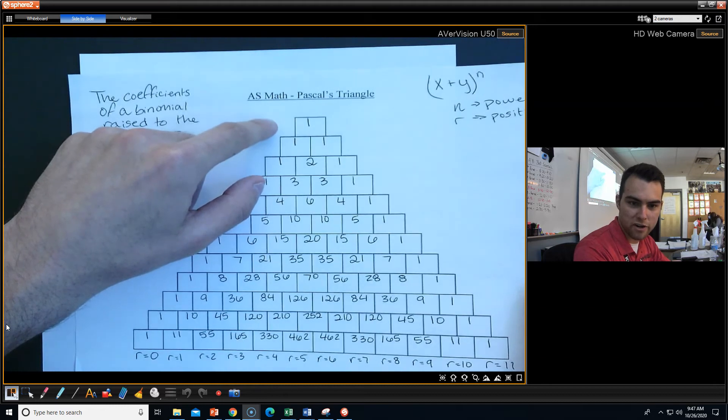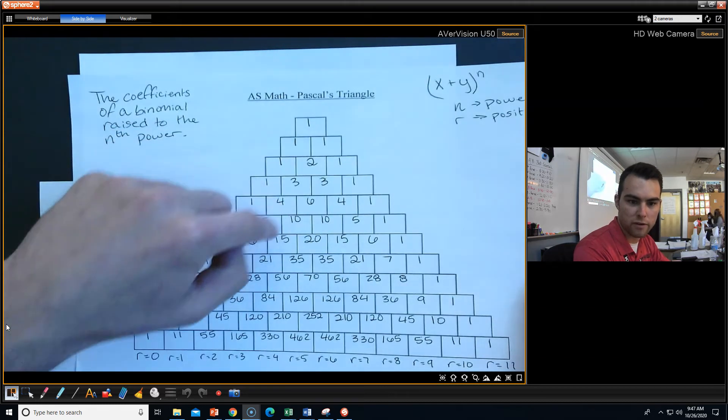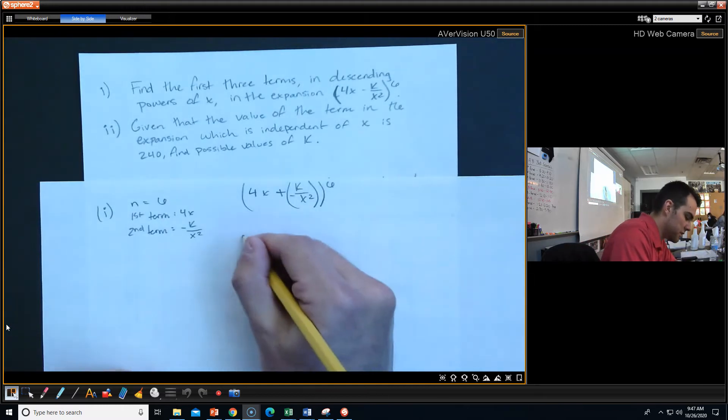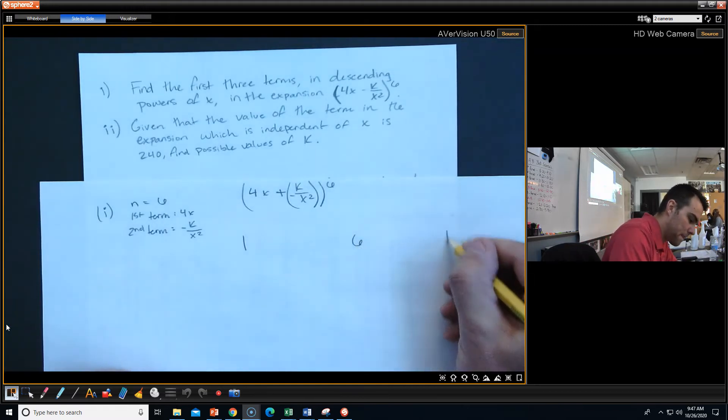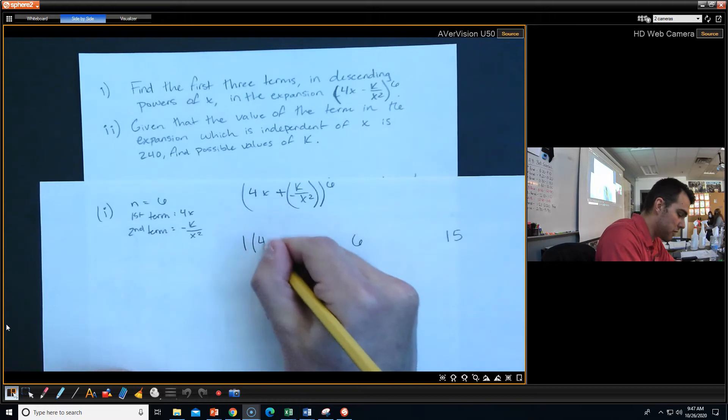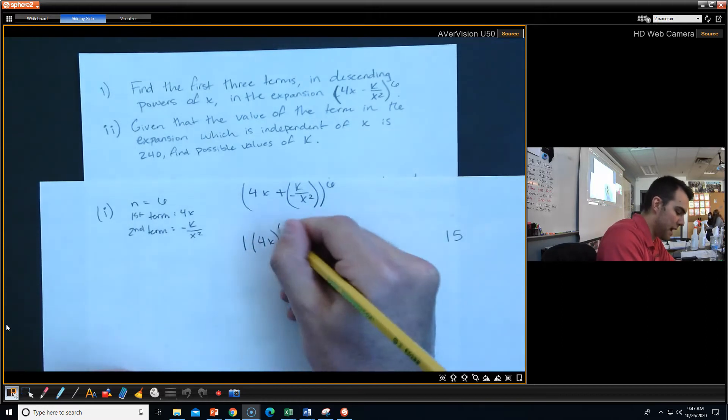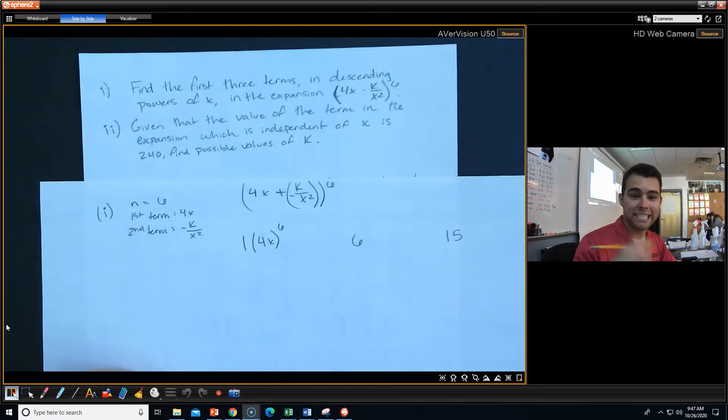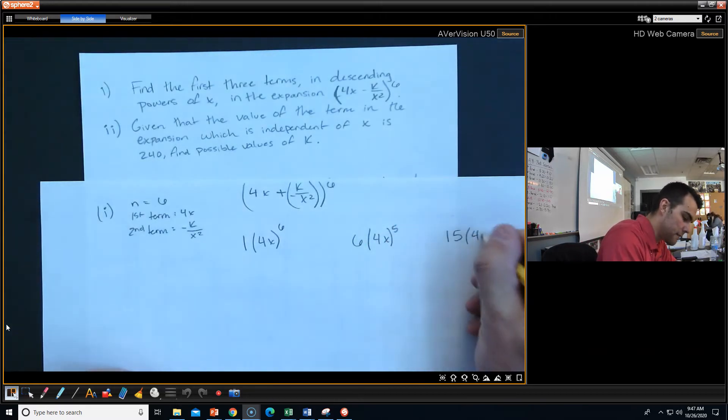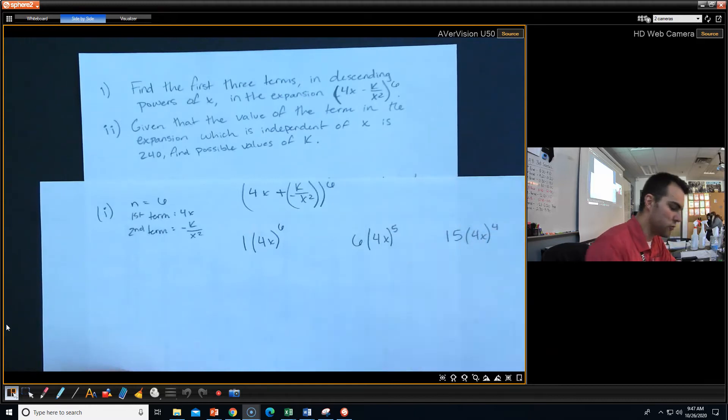So this is 0 power, 1, 2, 3, 4, 5, 6 right here. So I have 1, 6, and 15 for my first three terms. Let's write those out. And my first term is 4x, so I'm going to start off by doing 4x to the 6th power. And it's going to be descending, which means it's going to decrease by 1 every time.